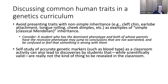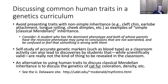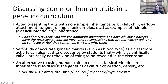A good alternative to using human traits to discuss classical Mendelian inheritance would be cat fur coloration — there are good examples of cat traits that are more closely Mendelian. A good resource is John McDonald's website at the University of Delaware. With that background, we move to today's activity: a genetics bingo.